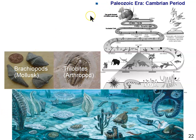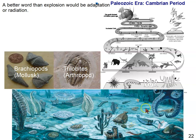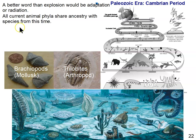Going from the Proterozoic era and Vendian period to the Paleozoic era, the Cambrian is the first period of the Paleozoic, and we see the Cambrian explosion. This is a neat representation of geologic time. The organisms in the fossil record from this time look weird and alien-like, but they're some of the first animals to have evolved. A better word than 'explosion' would probably be 'radiation' — the Cambrian radiation — but we call it the Cambrian explosion. All current animal phyla got their start in the Cambrian.